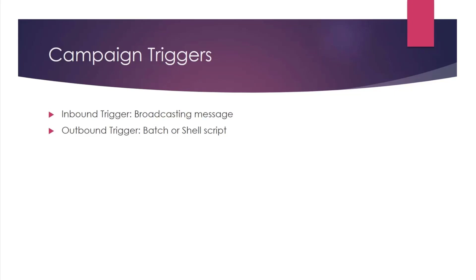Basically, there are two types of triggers in Unica Campaign called inbound trigger and outbound trigger. Inbound trigger is nothing but a message that is broadcast to other campaigns. We can configure flowcharts to listen for a trigger and start its execution. It can be used when you want to define one complete flow — for example, the execution of a pre-opt flowchart, optimization, and then post-opt flowchart.